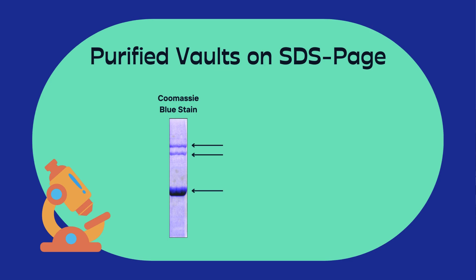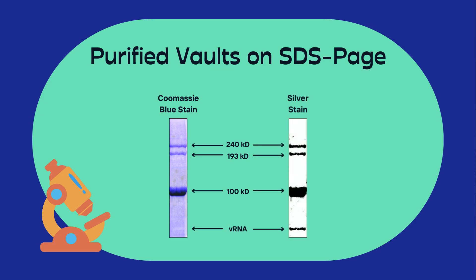The calculated sizes are labeled here. The largest one was about 240,000 Daltons, abbreviated 240 KD. The next largest was about 193 KD, and the third protein was about 100 KD. The 100 KD protein was the most abundant component of the vault — that's why it had the thickest band on the gel. Although the vault RNA isn't stained with the stain we used here, it also runs on the gel about where the lowest arrow is positioned. If we used a different stain, we could visualize the vault RNA.